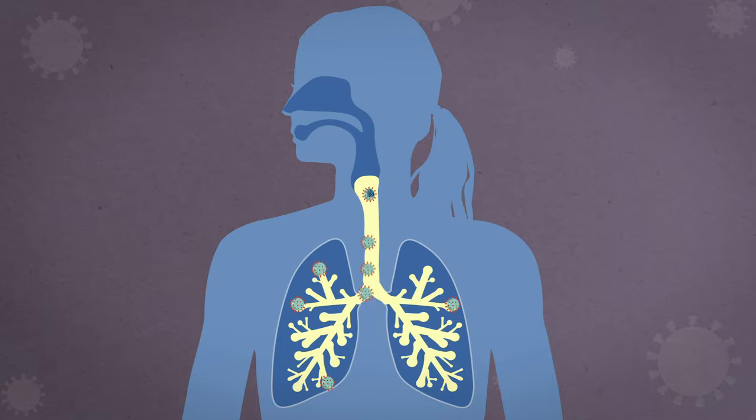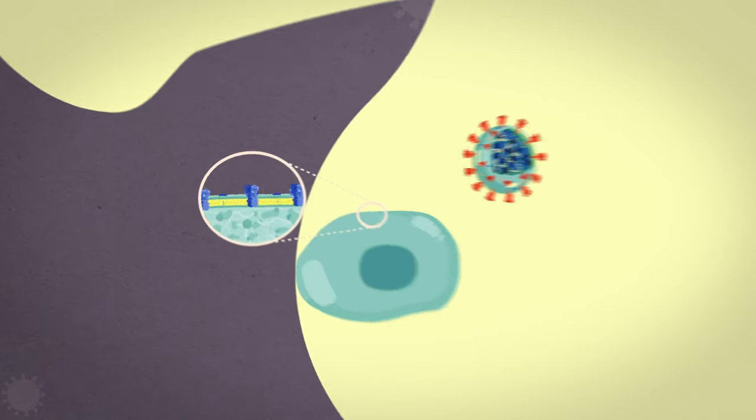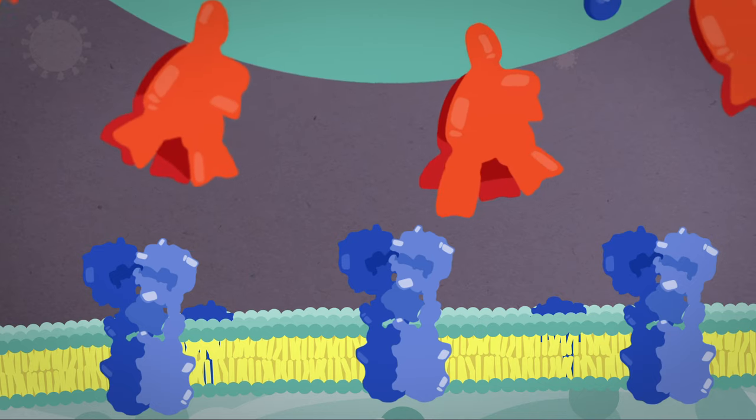The microscopic virus enters through the nose or mouth where it begins its infection of our airways. The outer spike protein of the coronavirus latches onto specific receptors on the surface of cells in our respiratory tract.